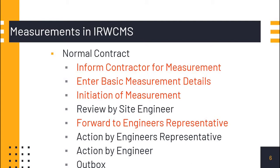Normally, when we use the physical measurement book — the hard copy — we write details about the contract agreement in the first part: those 10 items, such as whether it is a record measurement, location of work, name of work, name of the contractor, address of the contractor, date of commencement, date of measurement, date of completion, etc. We then write the schedule (Schedule A or B), item description, and provide the measurements. After adding all completed items, we affix our signature, the contractor signs, and it is submitted to ADEN for test check, completing the record measurement.